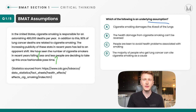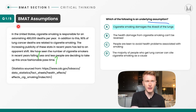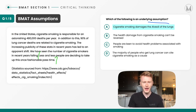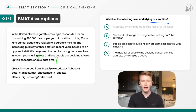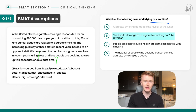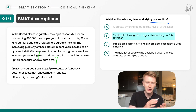Looking at the answer options: A — cigarette smoking damages the alveoli in the lungs. That's not an assumption; it's almost taken as a premise that cigarette smoking is responsible for these deaths, so it's not an assumption the author is making. B — the health damage from cigarette smoking can't be reversed. Again, he doesn't talk about reversing the health damage, and reversibility doesn't determine how many people are taking up this once fashionable pastime. So B is not correct.